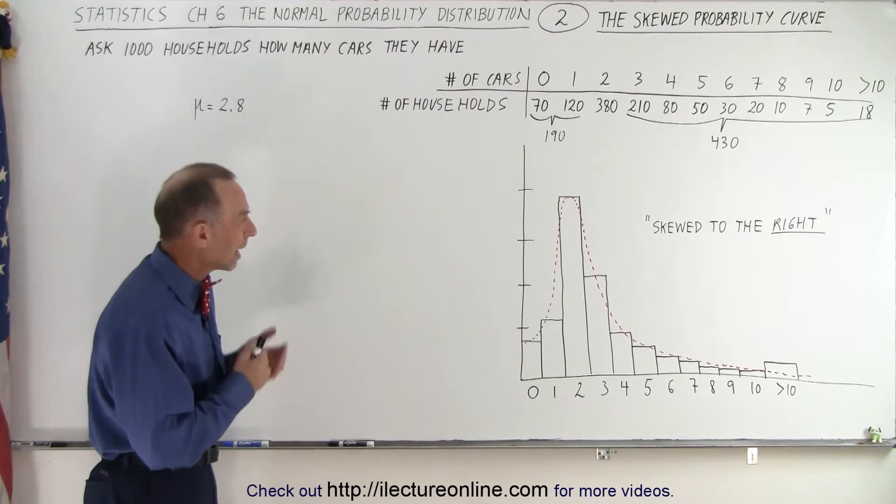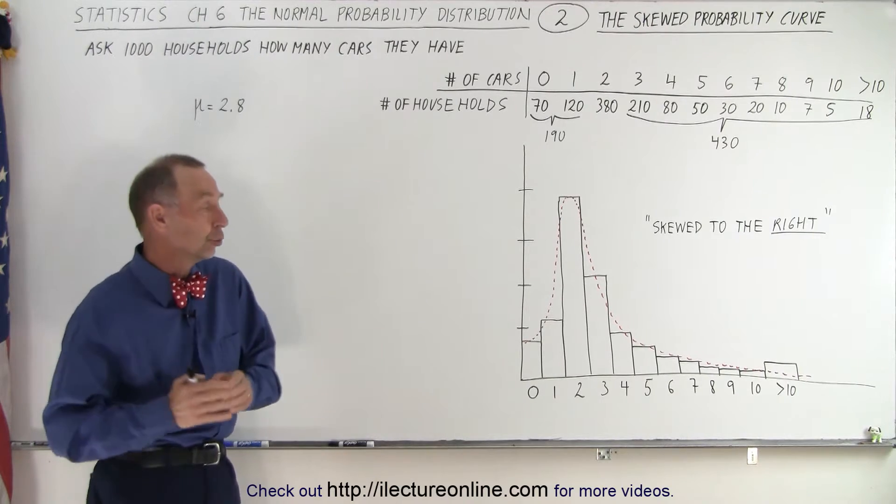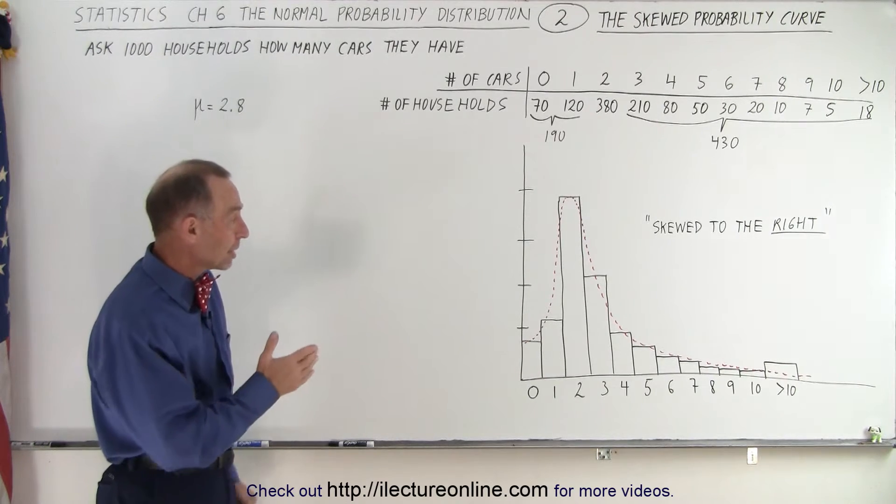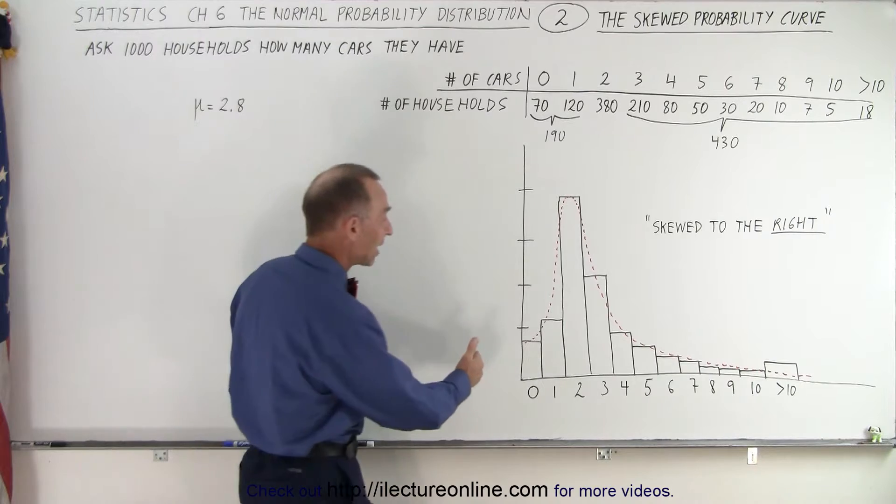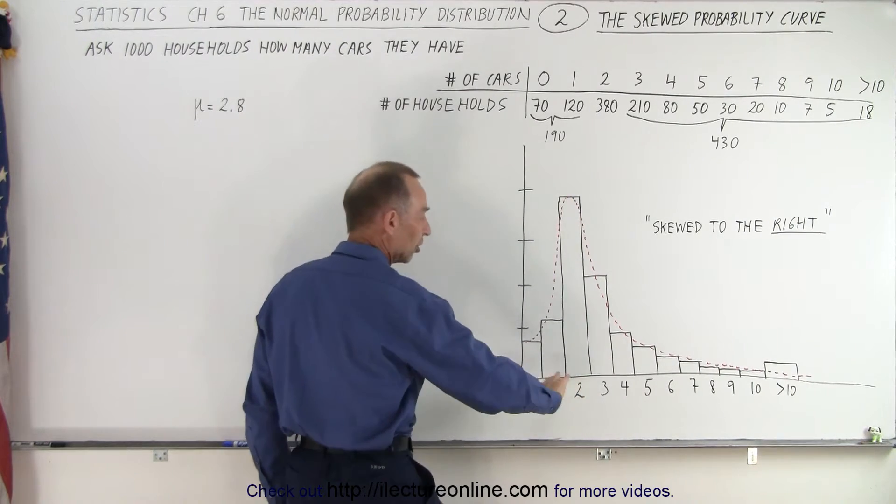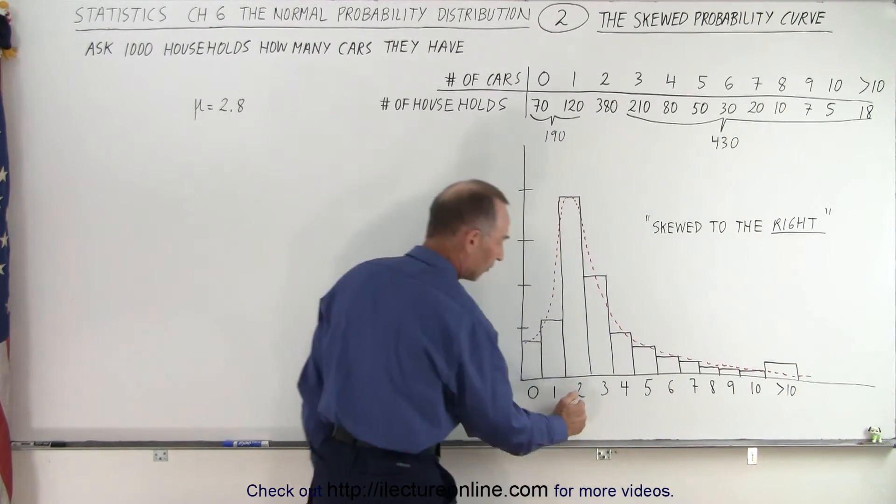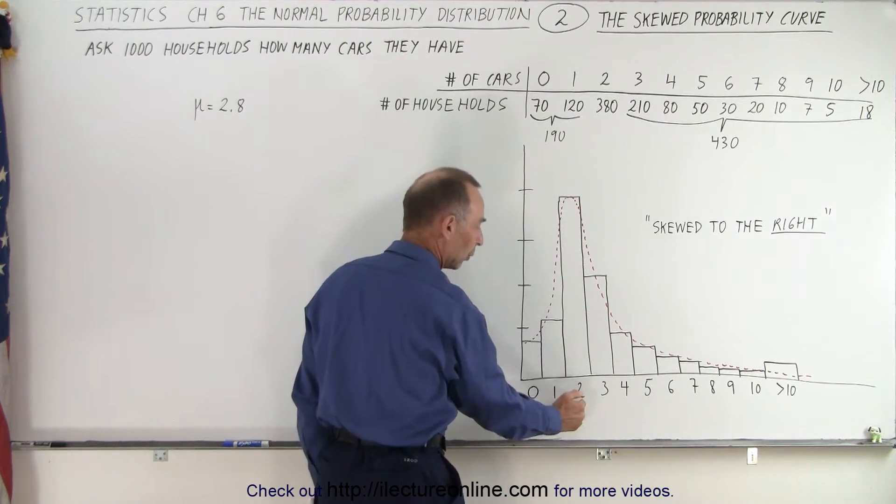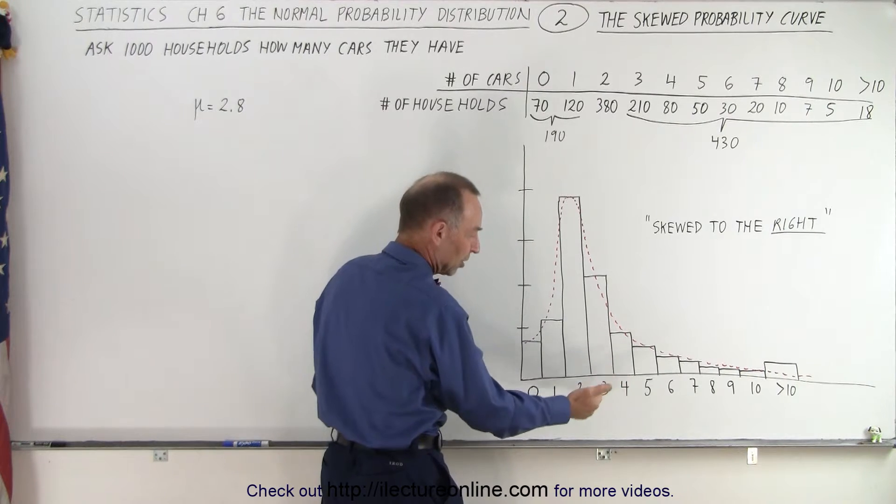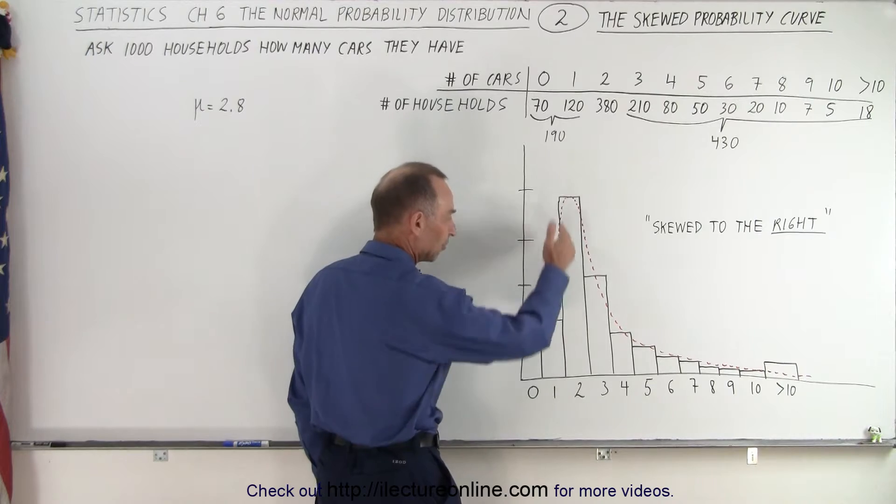So take a look over here, and notice that the curve appears to be what we call skewed. If you look at the particular numbers, notice that the maximum probability occurs with the number 2. But there's a lot of probability points to the right of the maximum probability point, where x equals 2, and x is the random variable. And notice there's just a few points to the left of the peak.